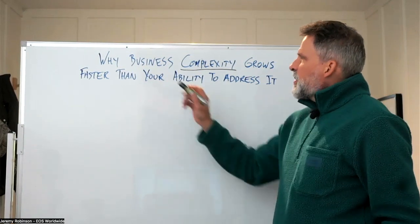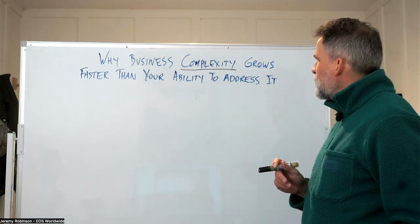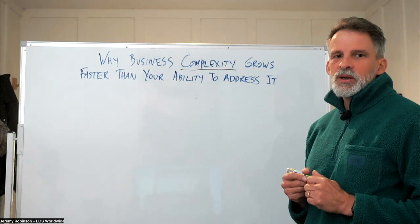So I want to talk about why business complexity grows faster than your ability to address it. And in order to illustrate this, I want to use something called the complexity model. And here's how it works.